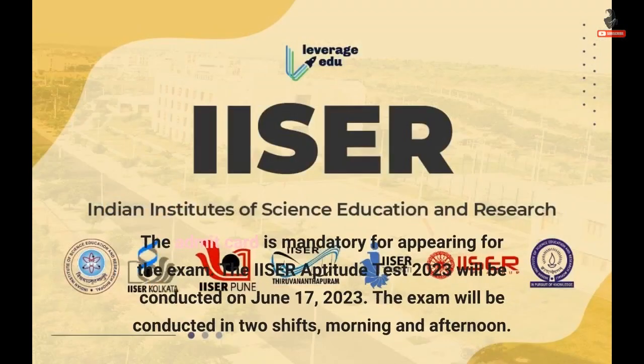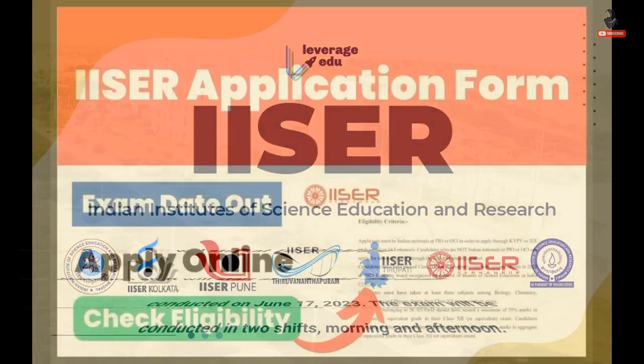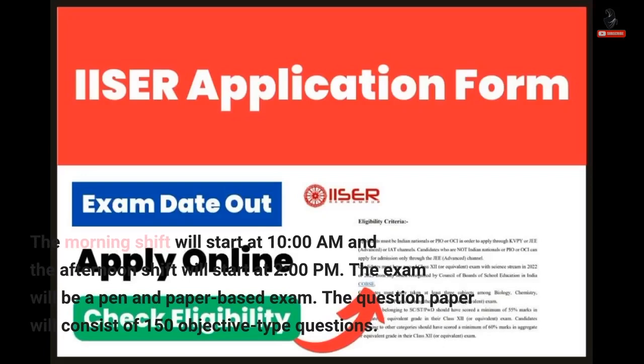The admit card is mandatory for appearing for the exam. The ISA Aptitude Test 2023 will be conducted on 17th June 2023. The exam will be conducted in two shifts — morning and afternoon. The morning shift will start at 10 am and the afternoon shift will start at 2 pm.